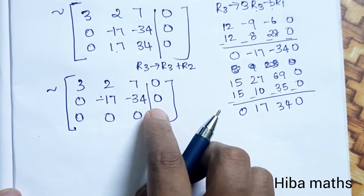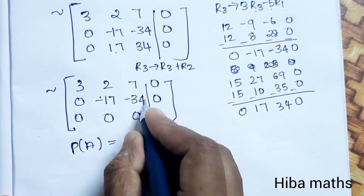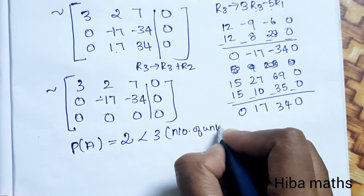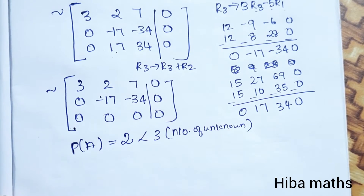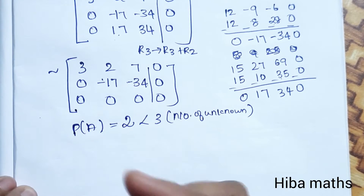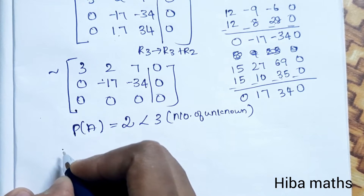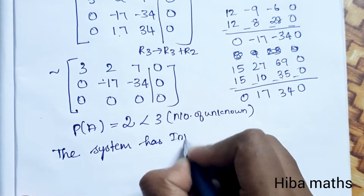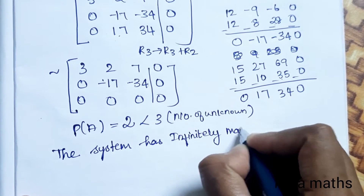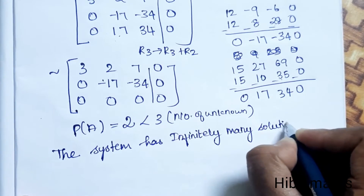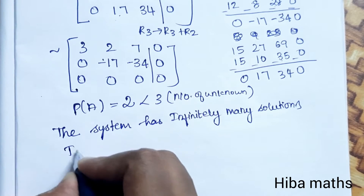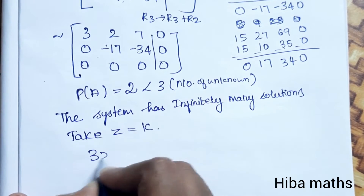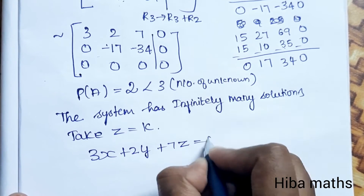Now the rank of A is 2, which is less than the number of unknowns (3). Since rank is less than number of unknowns, we assign the free variable z = k. The system has infinitely many solutions. Now substitute to find the other variables using the equations: 3x + 2y + 7z = 0 and -17y - 34z = 0.